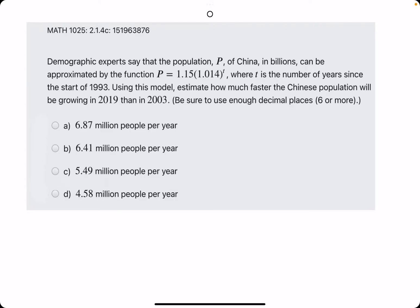Okie dokie, second example for this problem. I'll work it out much faster. If you'd like more of a breakdown though, please visit the first example. We are finding the rate of change in 2019 and 2003 using this function.